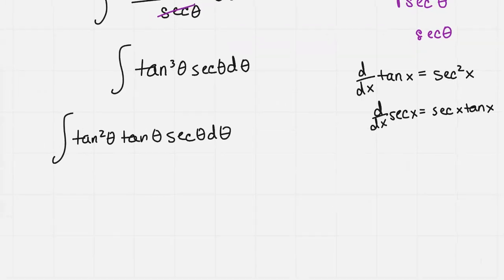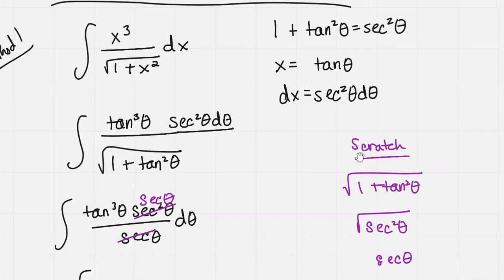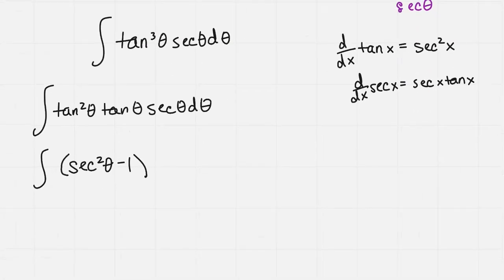The tan squared theta, using the same identity from the beginning but just moving stuff around, I get secant squared theta minus 1. If 1 plus tan squared theta equals secant theta, if I subtract 1 to each side, I can make secant squared theta minus 1 as a substitute for tan squared theta. Then I still have the tan theta times secant theta on the outside.